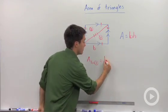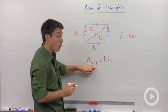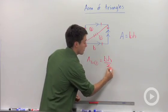And the area of the whole parallelogram is base times height. So to find the area of just one of these triangles, we're going to divide that in half.